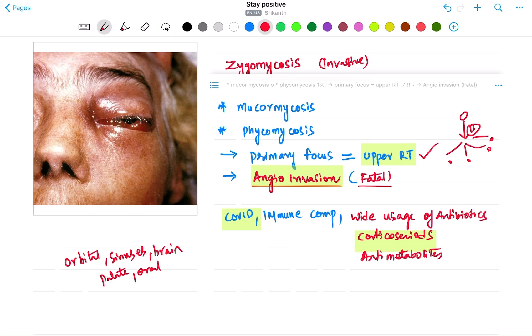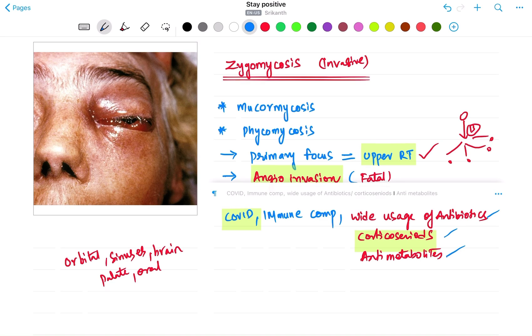And the combination things that they can give is a COVID-19 history, or immune compromised patient, or a patient which has an infection that leads to the wide usage of antibiotics, wide usage of corticosteroids, or wide usage of anti-metabolics. So these are the common background history they are going to give related to this particular type of infection.